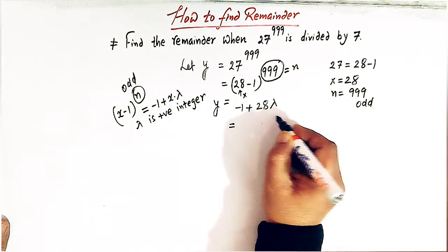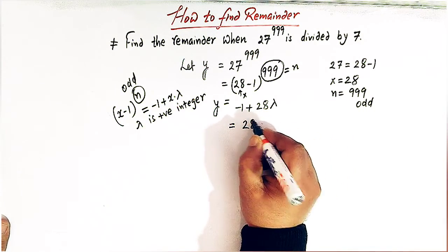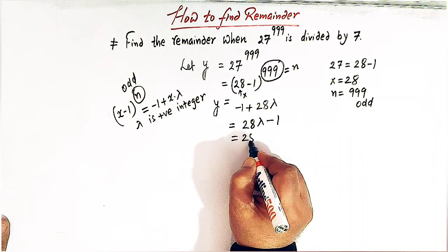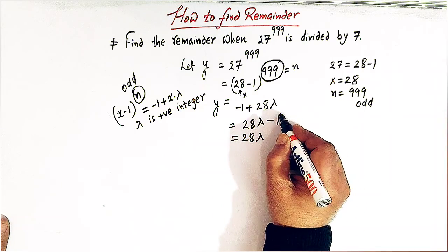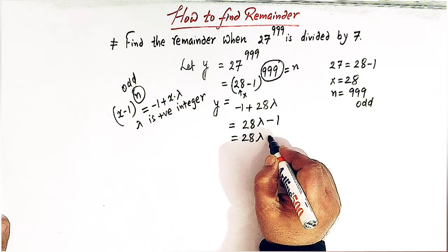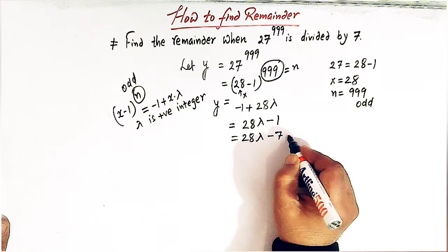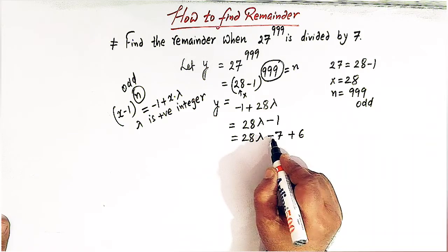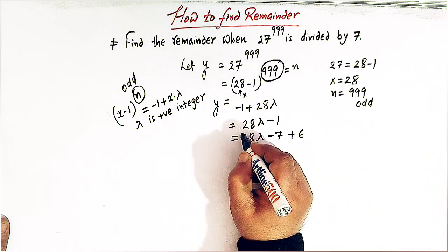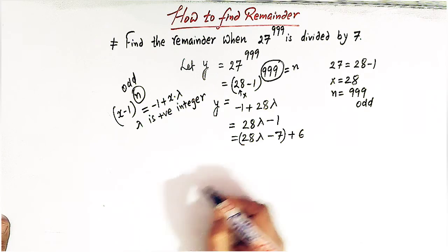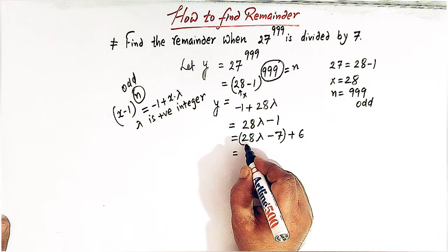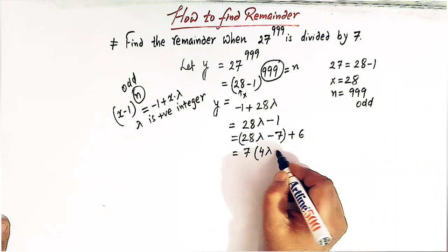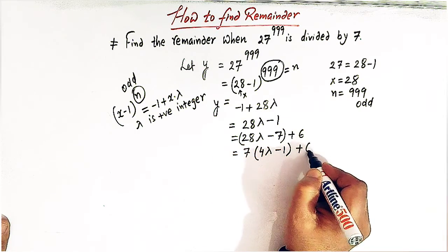Now we can express this expression as 28 lambda minus 1. We can write 28 lambda and now minus 1 can be written as minus 7 plus 6. Why we have written here minus 7 plus 6 is because we can now combine these two terms and we can take 7 common out of these two. So we have 7 times 4 lambda and here we have minus 1 plus 6.